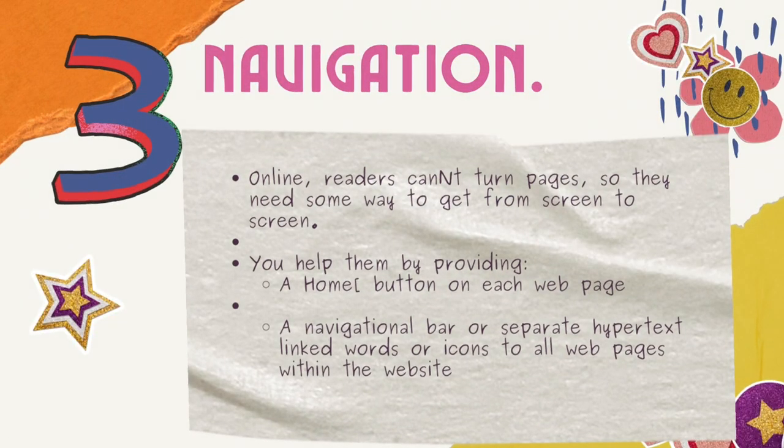Number three: navigation. Online readers can't simply turn pages, so they need some way to get from screen to screen. You help them by providing a home button on each web page, a navigational bar, or separate hypertext link words or icons to all webpages within the website.